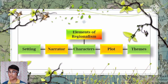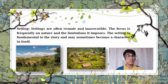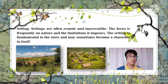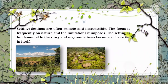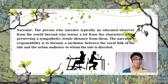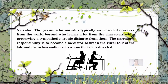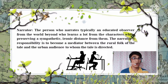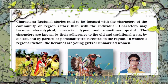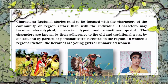What are the elements of regionalism? Number one is setting: settings are often remote and inaccessible, with a frequent focus on nature and the limitations it imposes. Setting is fundamental to the story and may sometimes become a character in itself. Number two is the narrator: typically an educated observer from the world beyond who learns from the characters while preserving a sympathetic and ironic distance. The narrator's responsibility is to become a mediator between the rural folk tale and the urban audience to whom the tale is directed. Number three is character: regional stories tend to focus on the characters of the community or region rather than individuals. Characters may become stereotypical character types, and sometimes quaint, known by their adherence to traditional and old ways, by dialect, and by particular personality traits central to the region.